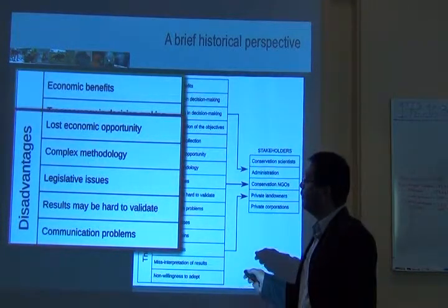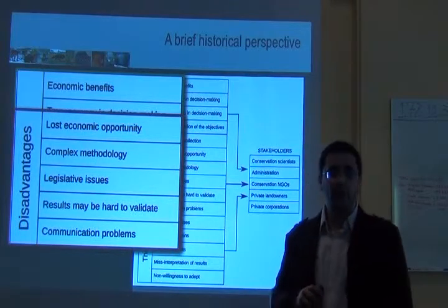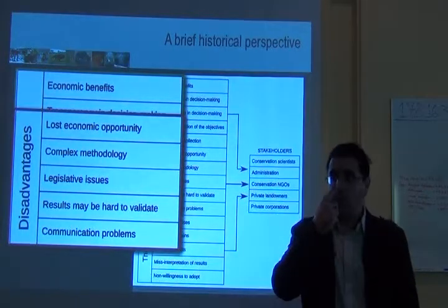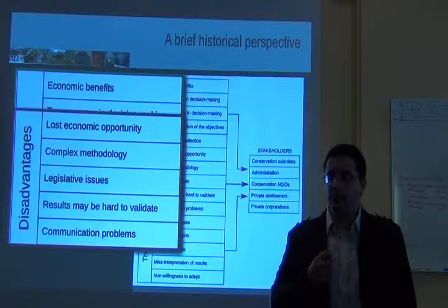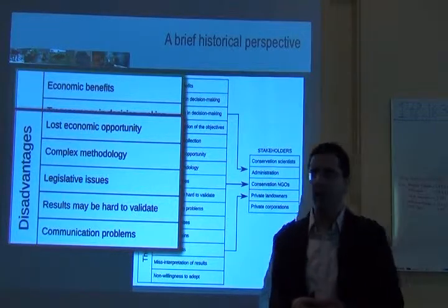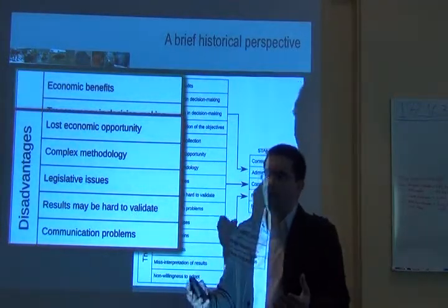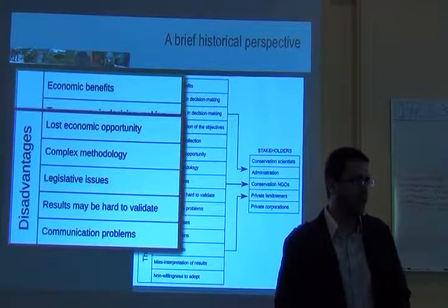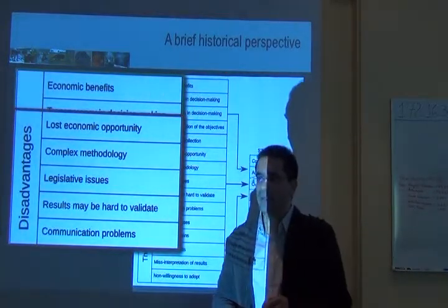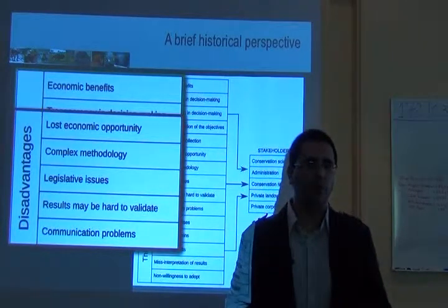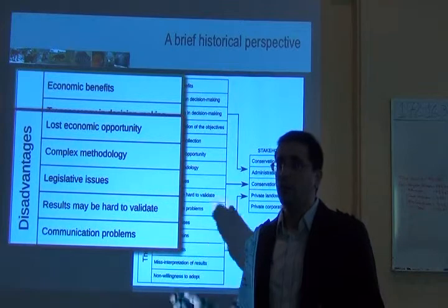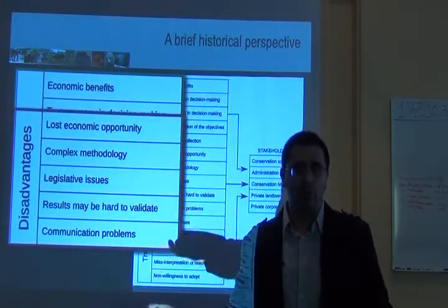It can sometimes be a complex methodology. Although it is clear, it can be very difficult to explain to other people what you're doing. It's not always hard to explain what systematic conservation planning is, but when people want details, it could be difficult to explain, for example, the algorithm you use to select places or the equations involved.